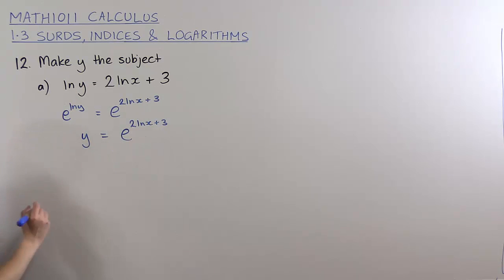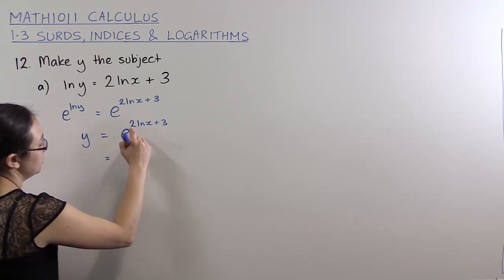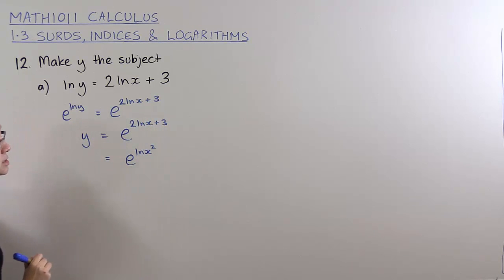Now y is the subject here, but we should neaten this up because we can. First of all, I can rewrite 2 ln x as ln of x squared.